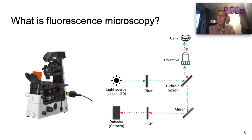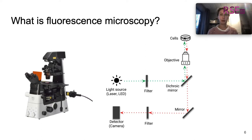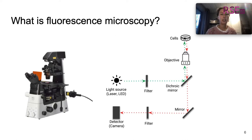Now that we understand what fluorescence is, let's look at the simplest possible setup for doing fluorescence microscopy. First of all, you need a light source, which is usually a laser or a LED. And next to that, you will need a filter. This filter will make sure that only monochromatic light passes, so we will work with a single wavelength.